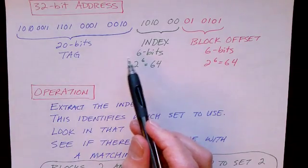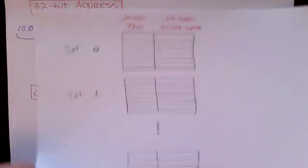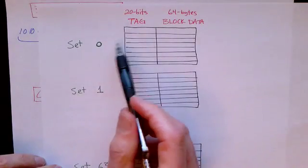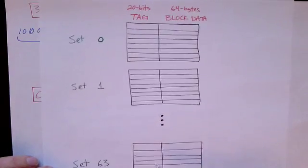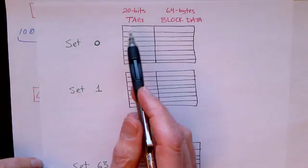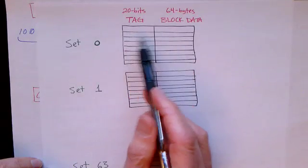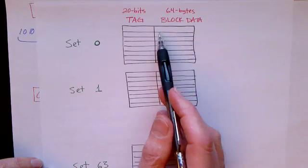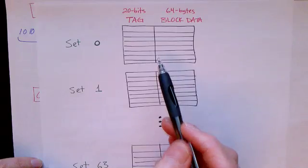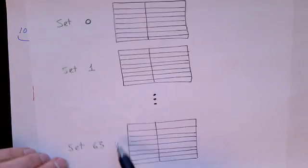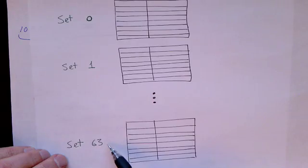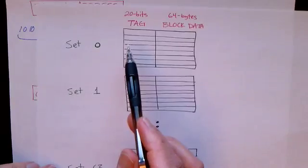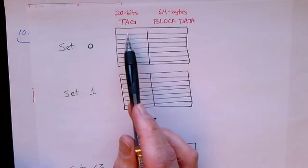We can use this picture to show what this thing looks like. I suppose I can draw a box around the whole thing, but this is the cache memory. Each line has both the tag and the 64 bytes of data just as before, but it's divided into sets and we've got 64 sets total.